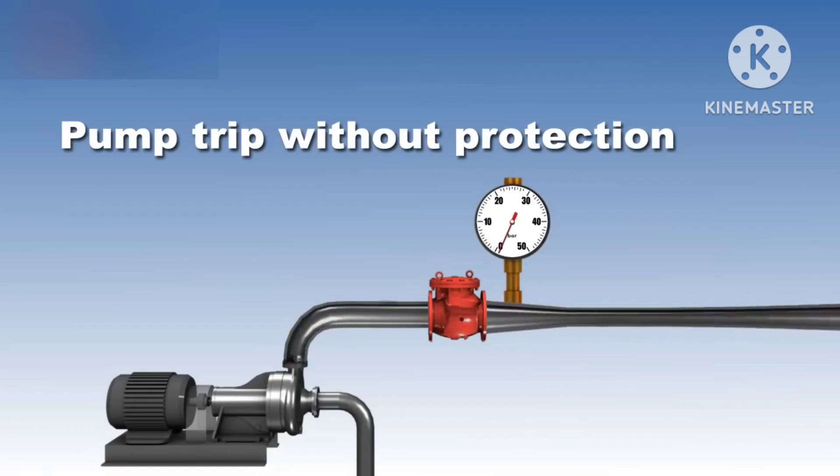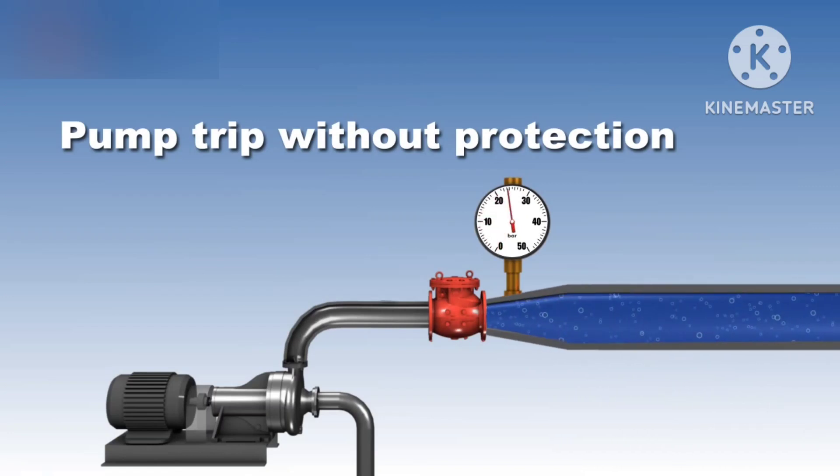It will come back towards the pump side. There is one NRV provided after the pump. It will come and hit the NRV. The pipe is damaged. NRV means non-return valve.